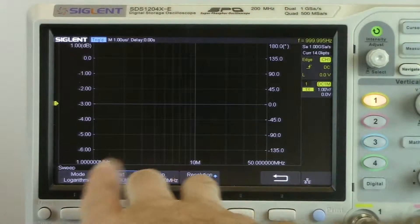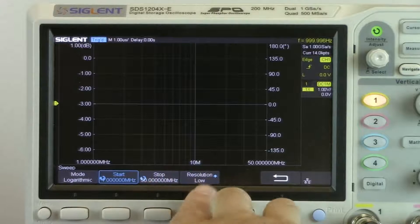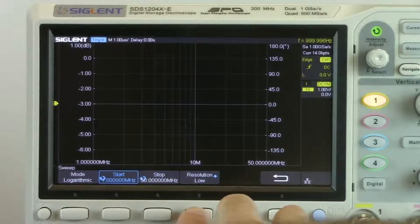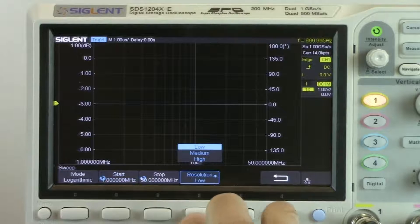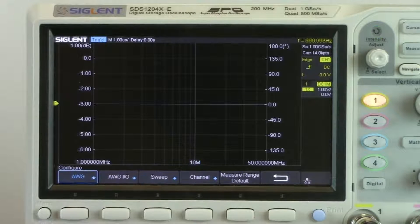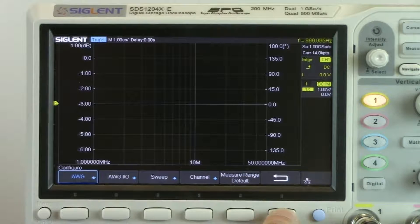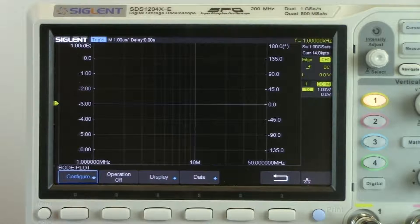And then let's change the start value. So again, we can rotate it to change it or we can press it in if we're going to do larger changes. 1 meg. So we're going to do a log sweep from 1 meg to 50 meg. And we could change the resolution or the number of steps between low, medium, and high. For this test, let's just do medium. And then we can back out. And back out one more time. And we should be all set, ready to go with this.